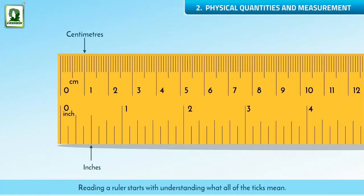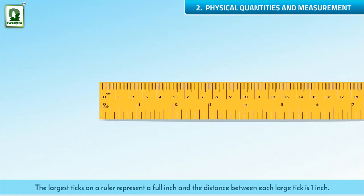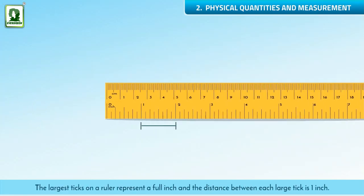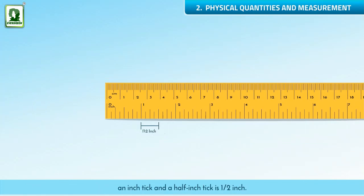Reading a ruler starts with understanding what all of the ticks mean. The largest ticks on a ruler represent a full inch, and the distance between each large tick is one inch. The large ticks that are in between the inch markings are half-inch markings, and the distance between an inch tick and a half-inch tick is one-half inch.